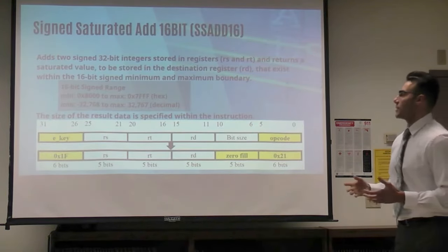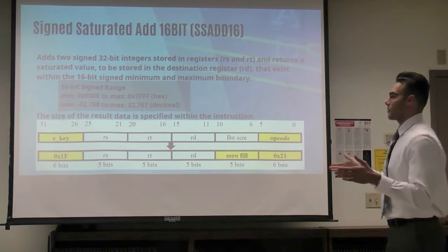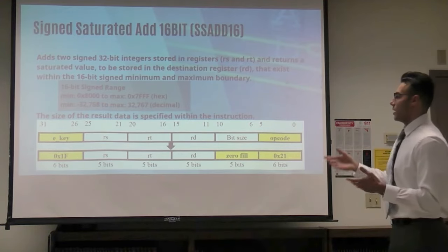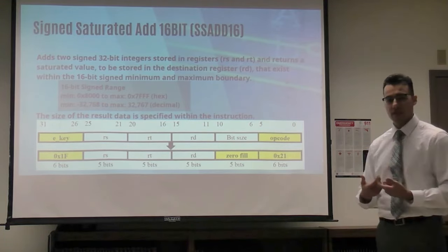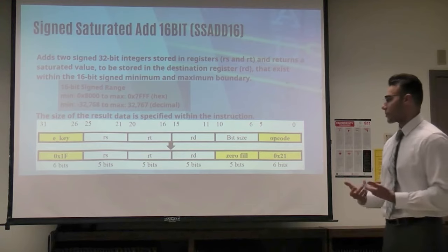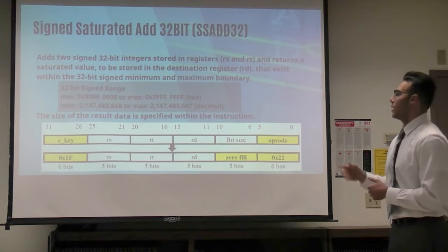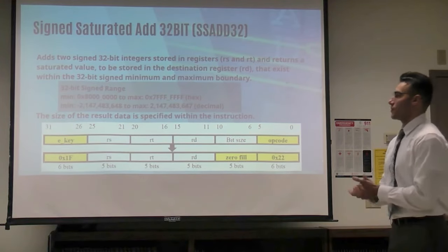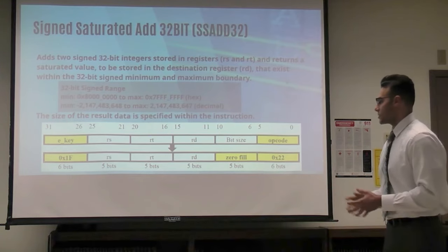For 16-bit signed saturated add, same concept but bigger range. We take RS and RT, add them together, and the processor compares to the range. For 32-bit, same concept again but bigger range.